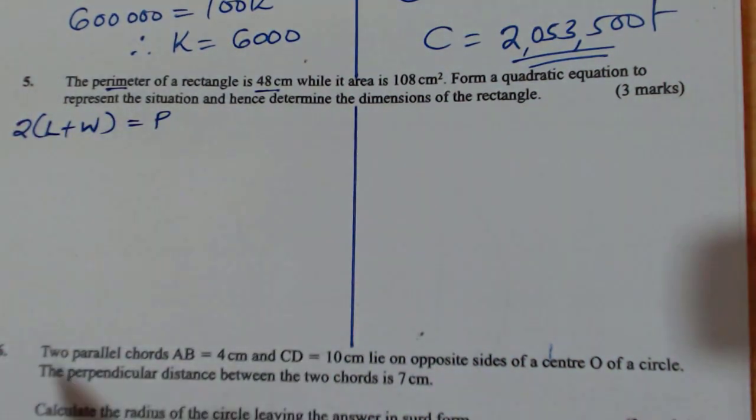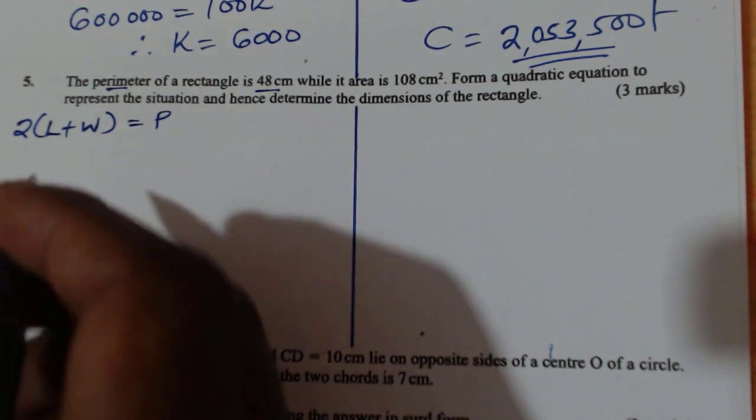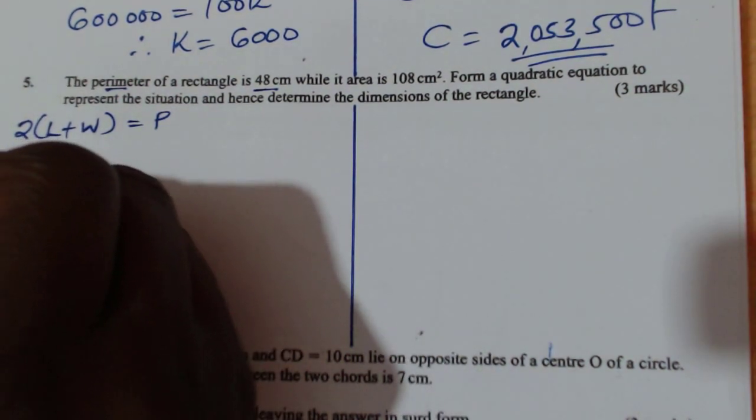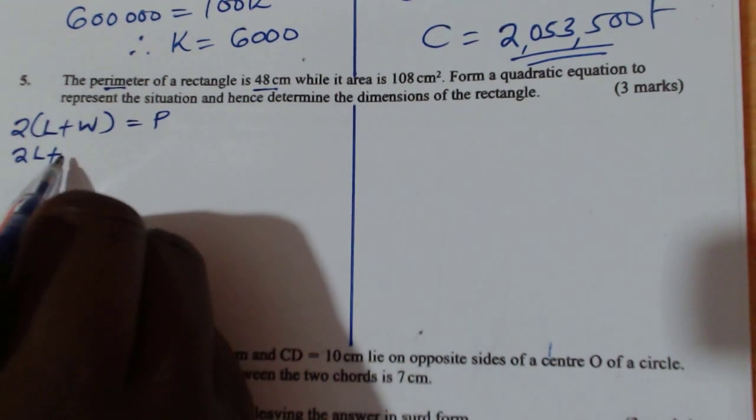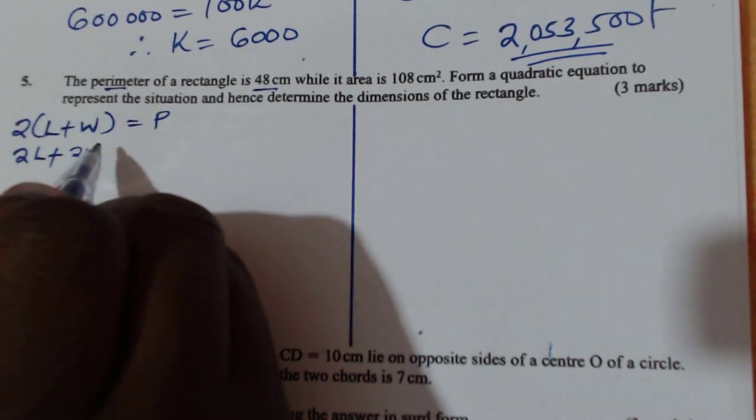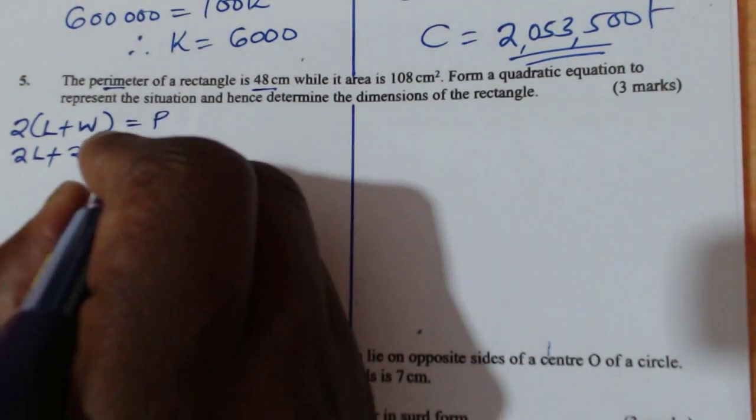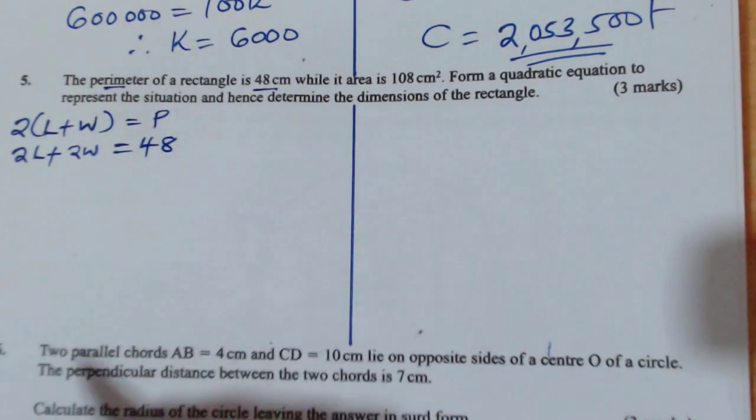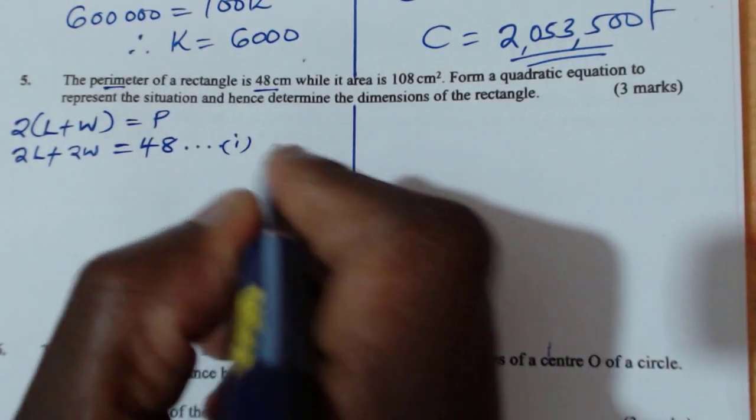So that is how we get perimeter. So this one will be 2L plus 2W. That is equal to 48. That is the first equation that is going to help us get the dimensions.